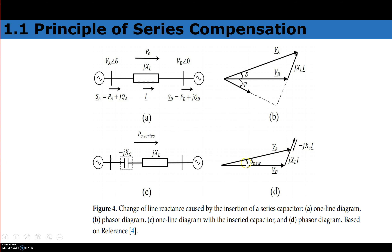When angle delta is reduced, sin(delta) increases, so real power transfer PE increases. The reduced reactance also means reduced voltage drop, improving the voltage profile. Additionally, as delta changes and sin(delta) changes, stability improves — both steady-state stability and transient stability are enhanced.